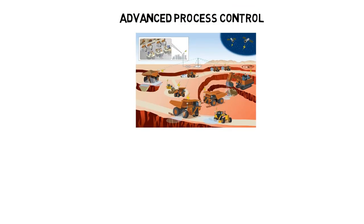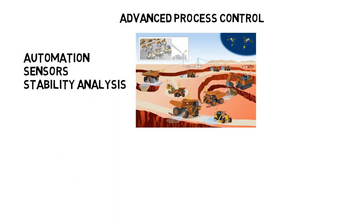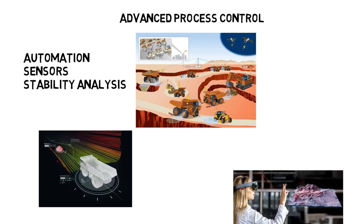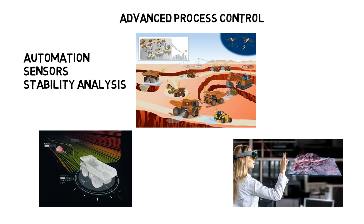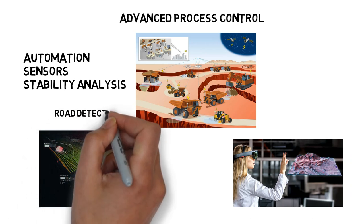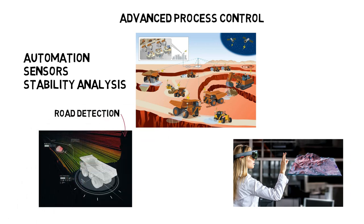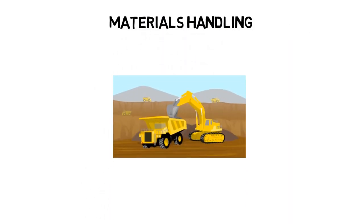In the mineral processing control course, you'll get to learn about the cutting edge technology used in mining and mineral processing operations — think automation, sensors, and stability analysis. There's a lab for this class too, where you get to design prototypes to solve real-world problems. For example, some people in my class developed a sensor for haul trucks to detect and analyze road conditions, and another group developed an augmented reality program for doing pit wall inspections without having to go into the field, thereby avoiding a potential safety hazard.